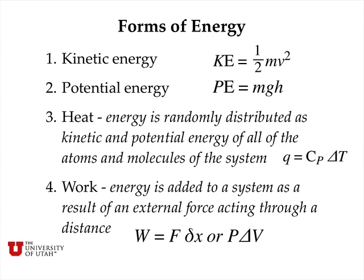There are many different forms of energy. We're familiar with kinetic energy as being one-half times the mass times the velocity squared, or potential energy — for example, gravitational potential energy — which is just the mass of an object times the gravitational acceleration times the height above some arbitrary reference point. We're familiar with heat energy as energy that's randomly distributed as both kinetic and potential energy of all the atoms and molecules of a system. The amount of heat added to a system is equal to its heat capacity times the temperature change. Work energy is energy added to a system as a result of an external force acting through a distance — for example, we can accelerate an object or compress it and change its volume. Work would be equal to the pressure times the change in volume.